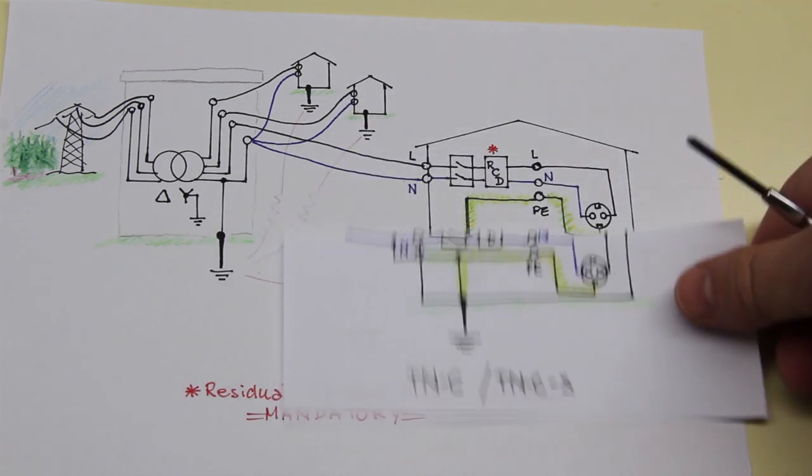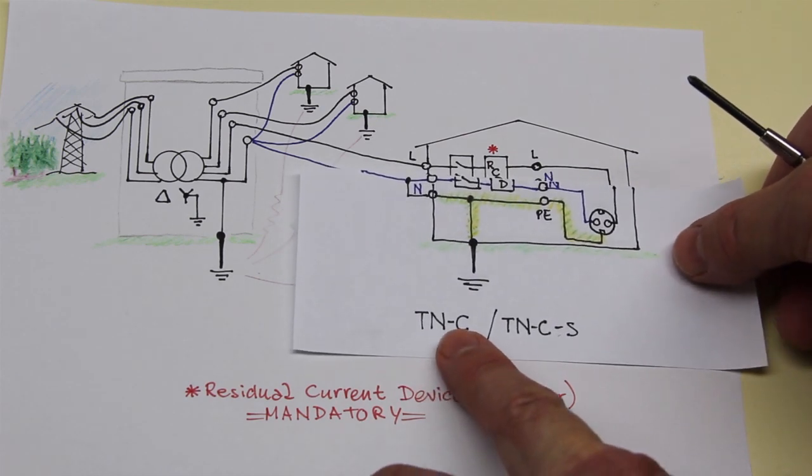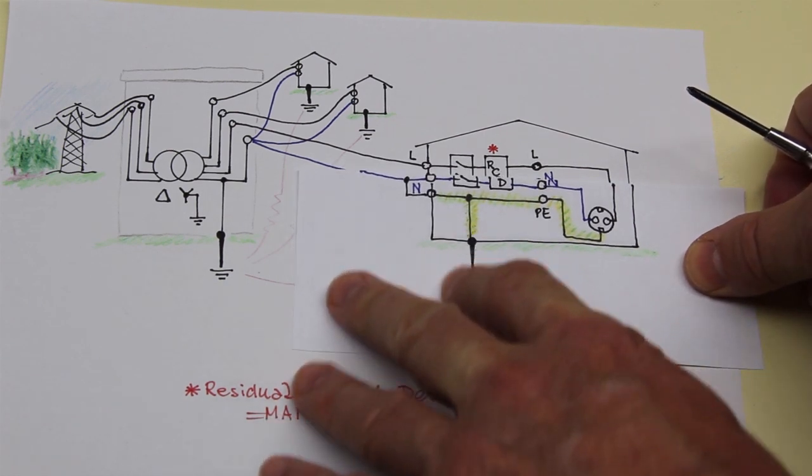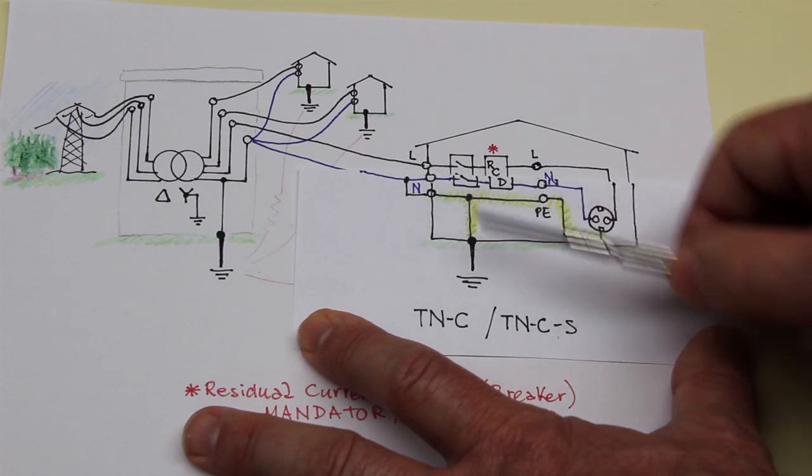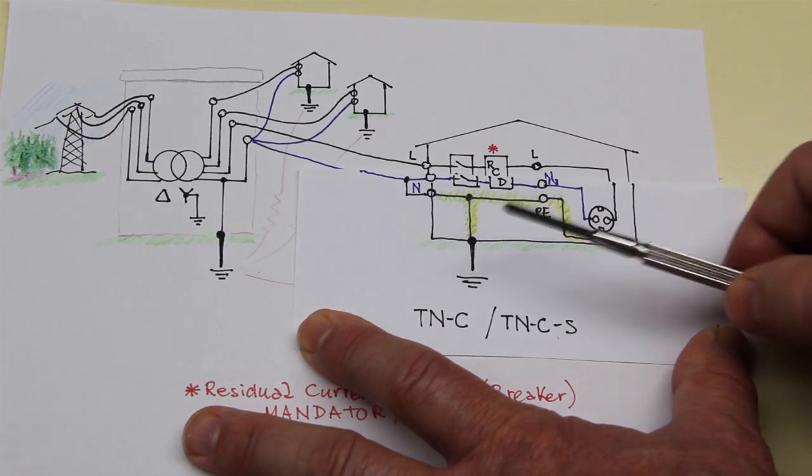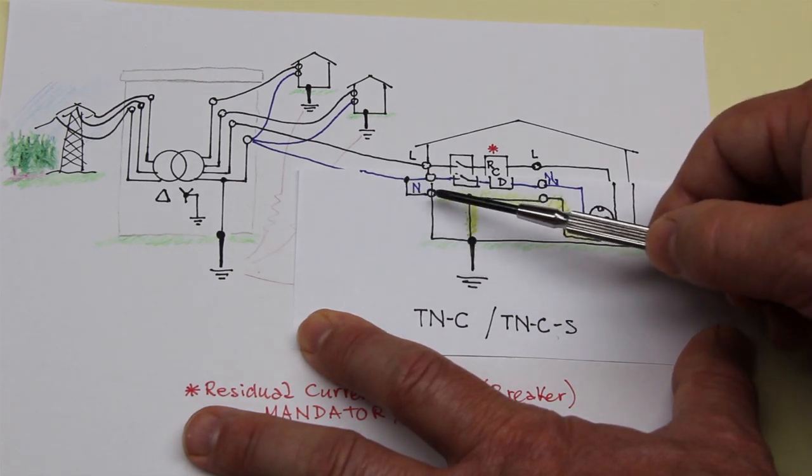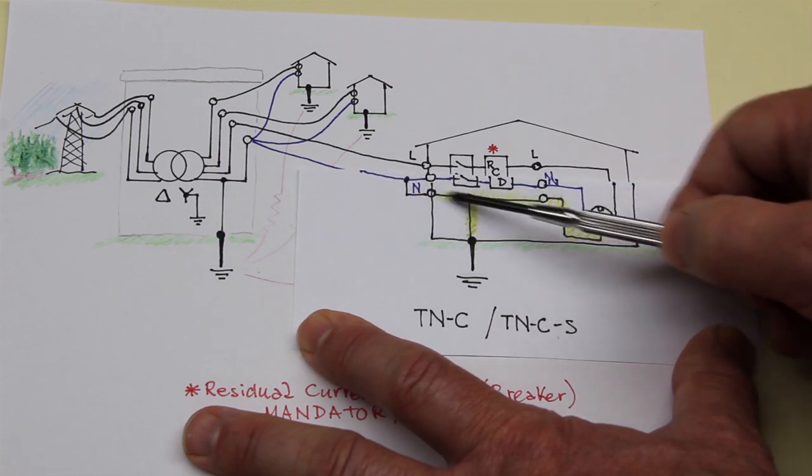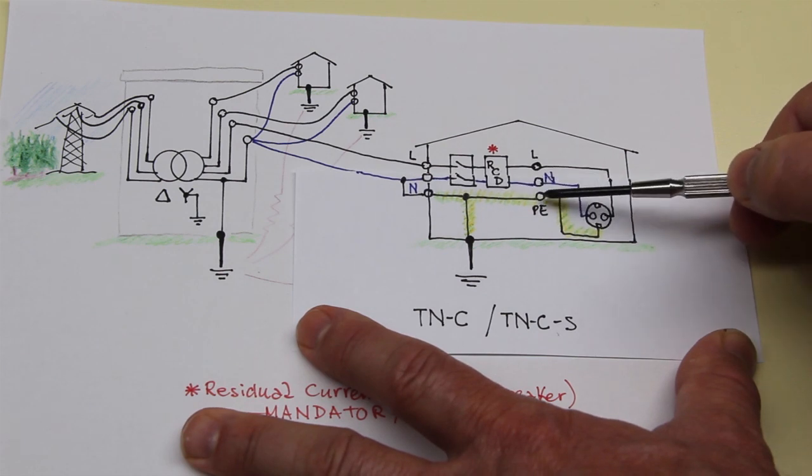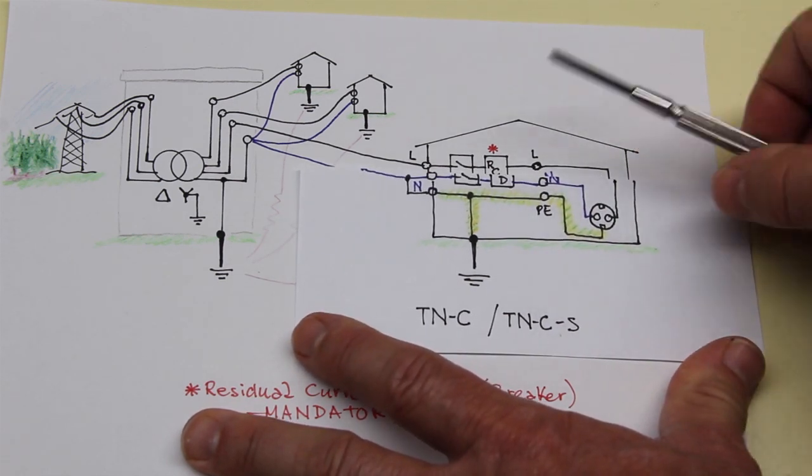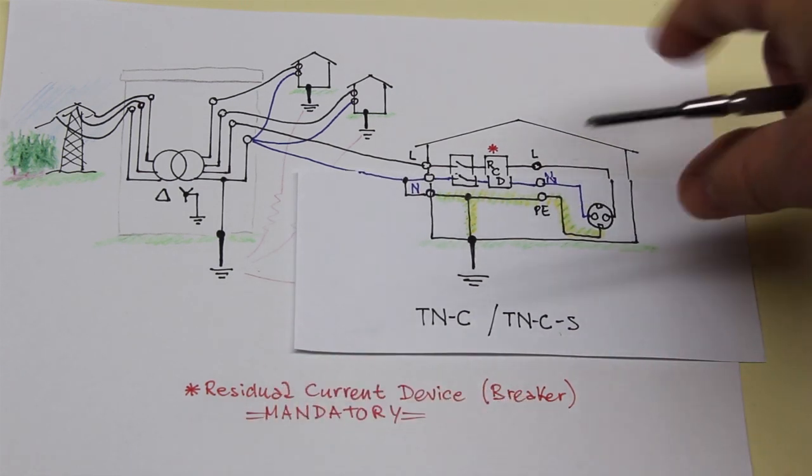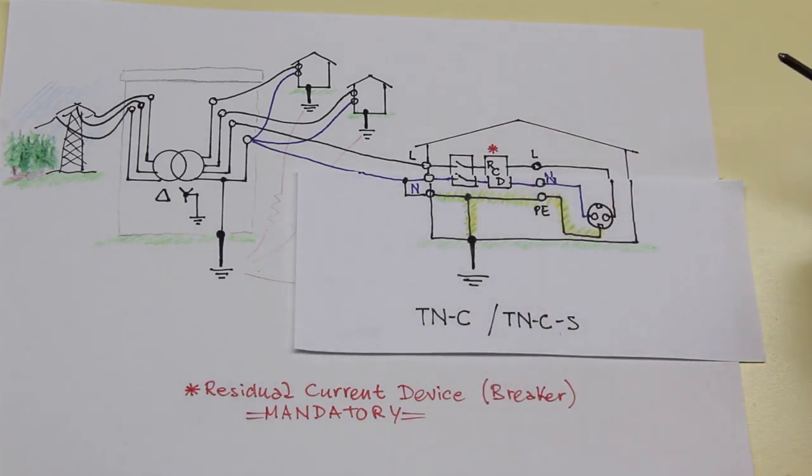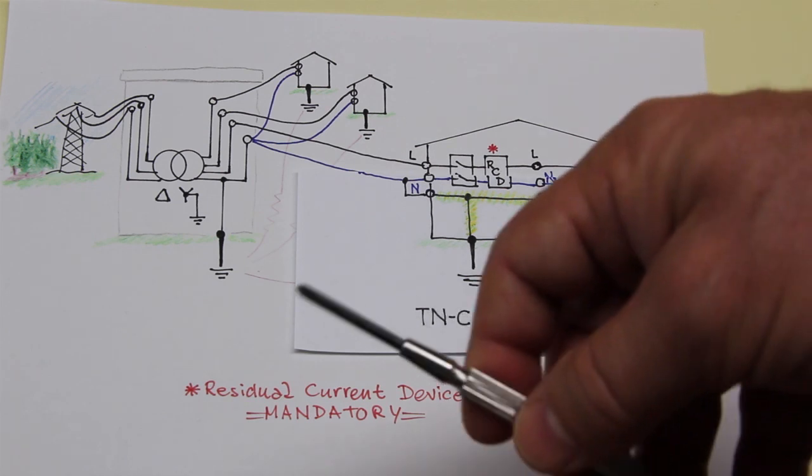In certain locations of Europe, however, there's another possible arrangement that is named TNC or TNCS, but more likely TNC. The difference is where this joint is located, and in this case the neutral is linked to the protective earth. In this case the neutral is at the same voltage of the protective earth. In North America there are sometimes this kind of arrangement or other kinds of arrangements, and in other places of the world there are other earthing systems.